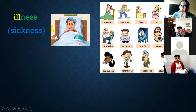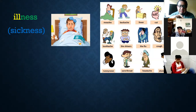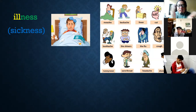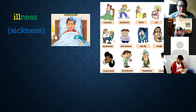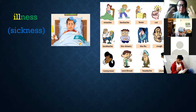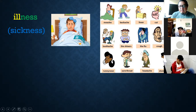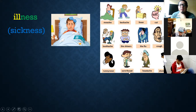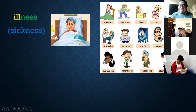Este es el primero. 'Ill' — it's an adjective. ¿Qué significa 'ill'? Significa enfermo. Por ejemplo: 'I was ill.' Si le agregamos el sufijo -ness, creamos el sustantivo 'illness,' que significa enfermedad. Examples of illnesses: fever, cold, cough, toothache, runny nose, headache, stomachache, cancer, AIDS — it's an illness, a terrible illness.